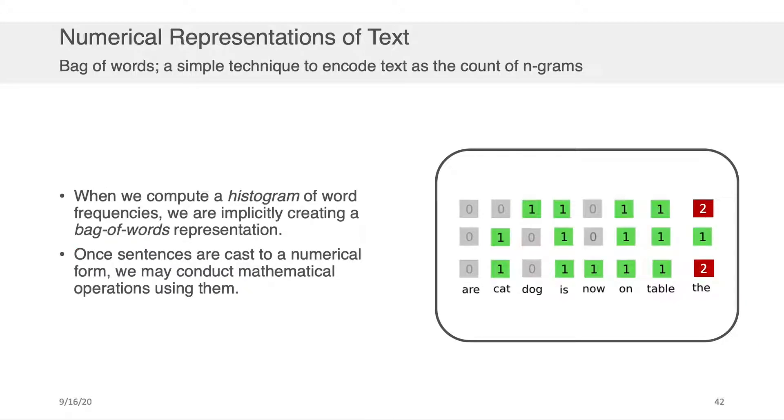Now, when we compute a histogram of word frequencies, we're implicitly creating a bag of words representation. Think back to the spam filter example that we spoke about in the last component of this lecture series. We took the words from the messages and created histograms out of those words or counted them.